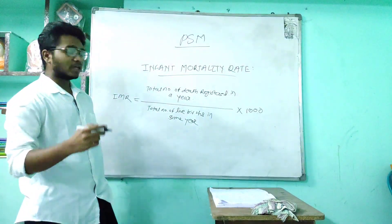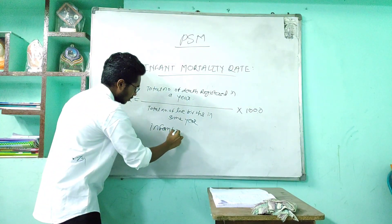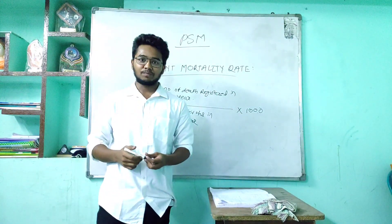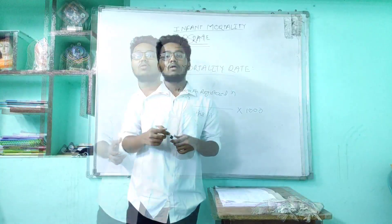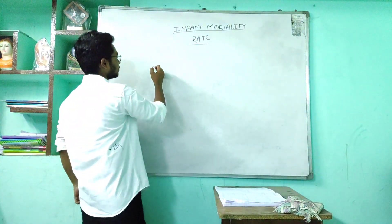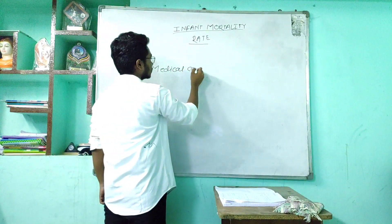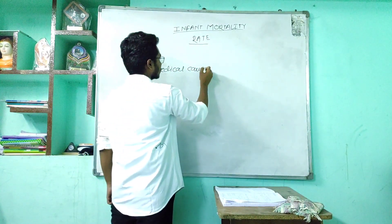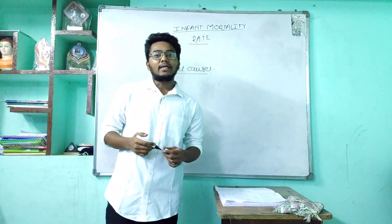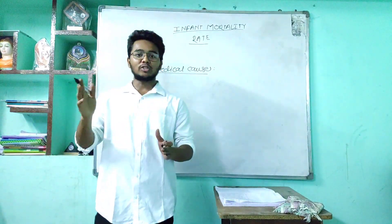An infant is a child below one year of age. The medical causes of infant mortality rate are multifactorial and are divided into two categories: neonatal and post-neonatal.